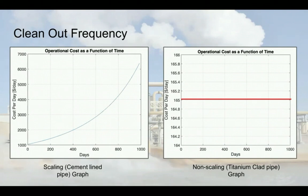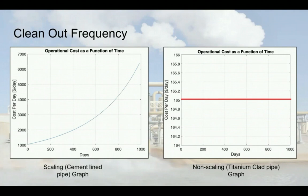What we really mean when we say the operational expense is the cost of operating the pump which transports the brine through the injection line. In our analysis, we decided to include two different pipe materials: first, the traditionally employed cement-lined carbon steel spool, which is susceptible to scaling, and second, the more innovative and non-scaling titanium-clad pipeline. As Joe was just saying, we used our simulation software to determine how the scale deposits on the inner walls of the pipe as time goes on.